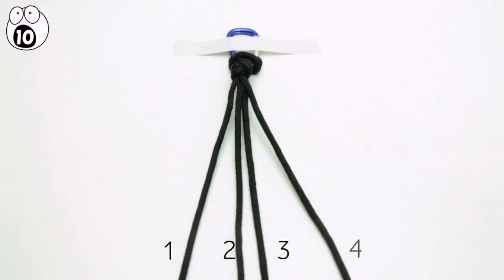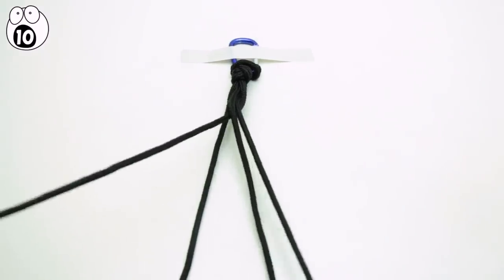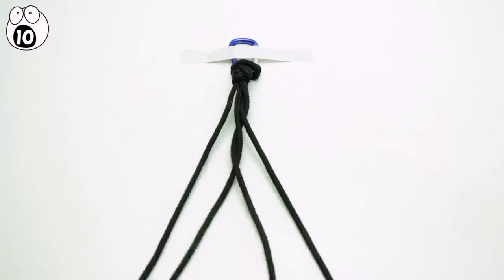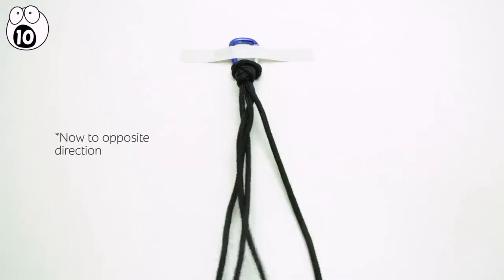Start braiding using what's called a four strand round braid. Here you can see number four goes under number three and number two, then over number two, becoming number three. Repeat this pattern to make around four or five inches of rope.